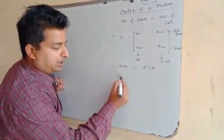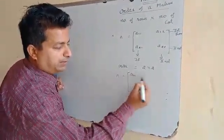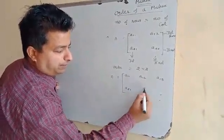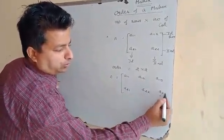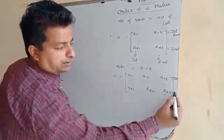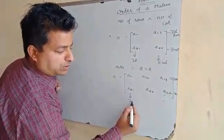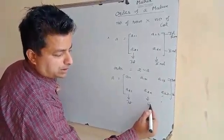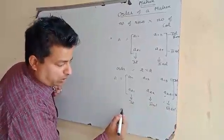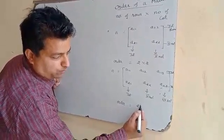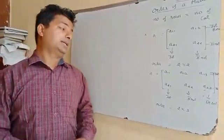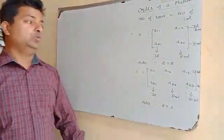Another example: A is equal to A11, A12, A13, A21, A22, A23. This is called the first row, this is called the second row. This is the first column, this is the second column, this is the third column. In this matrix, the order is number of rows which is 2, number of columns which is 3. This means the given matrix has an order of 2 by 3.